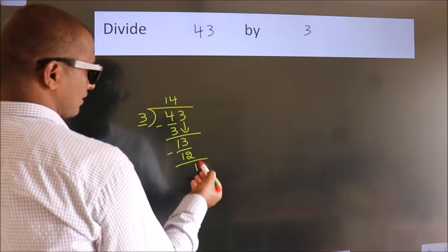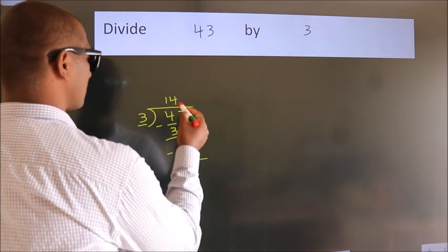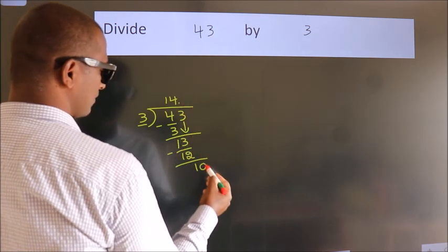After this, no more numbers to bring down. So what we do is, we put a dot and take 0. So, 10.